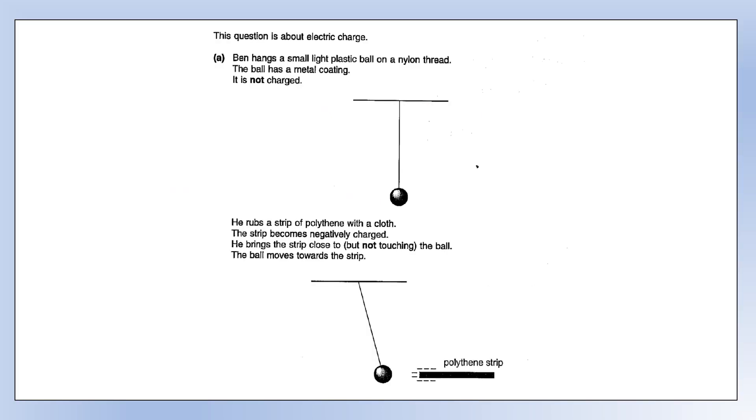Looking at a question about charge. Ben hangs a small plastic ball on a nylon thread as we can see in the diagram. We've given the ball a metal coating. It is not initially charged. We rub a strip of polythene with a cloth, and that makes the strip negatively charged. You bring the strip close to but not touching the ball. The ball moves towards the strip.